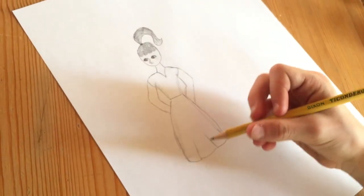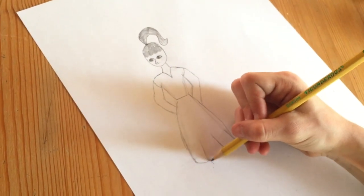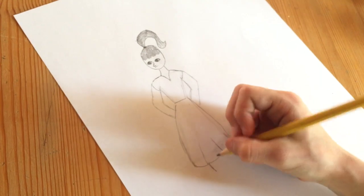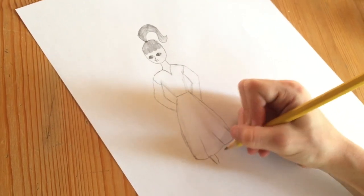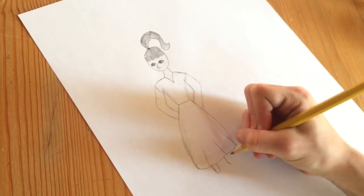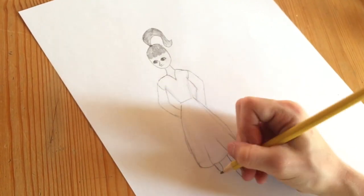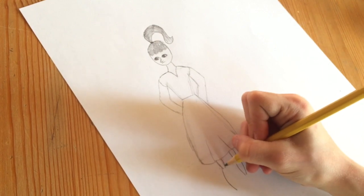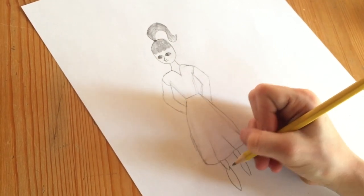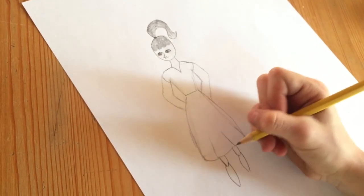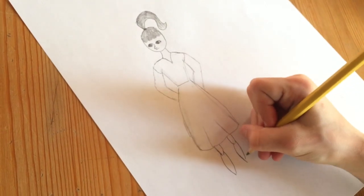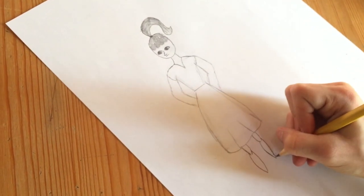Now to make the legs, you are going to first go like that, and then over here too. And then to make it as if it's like the knee, like that, and then the feet.